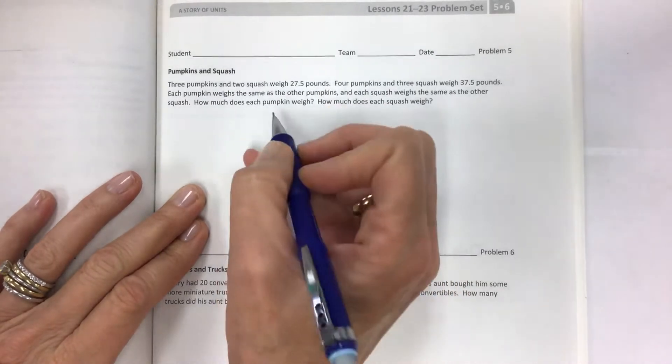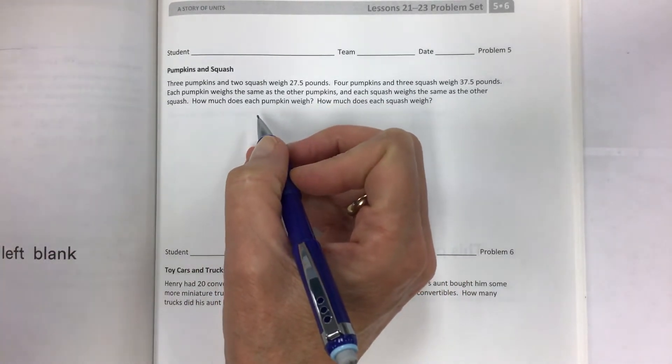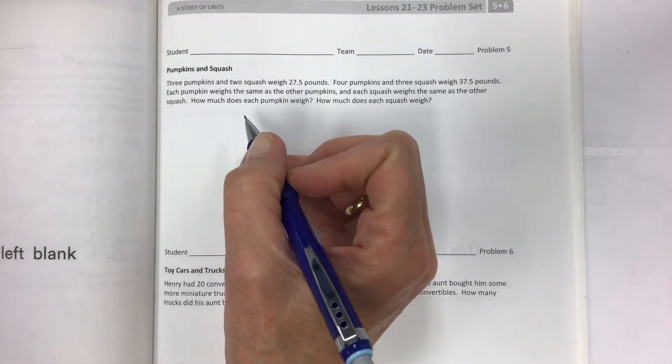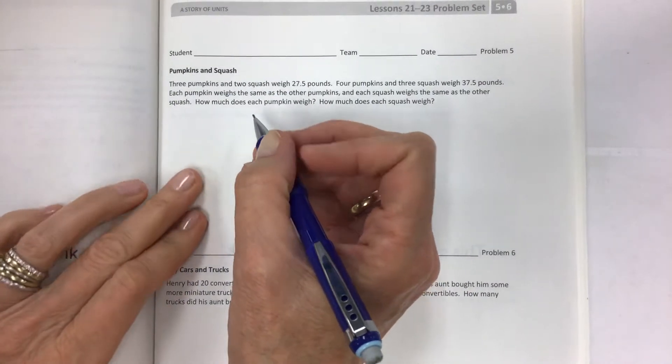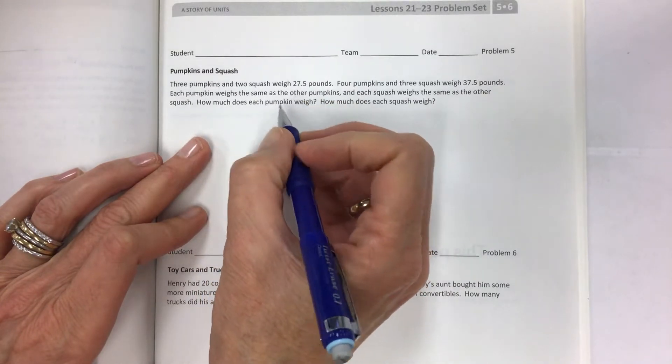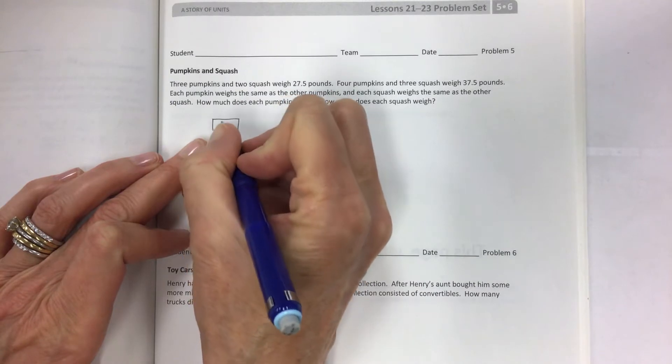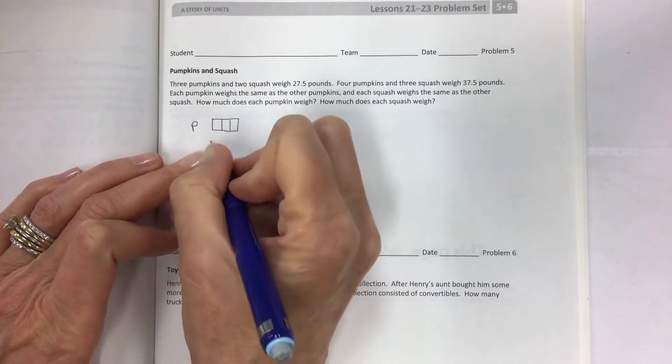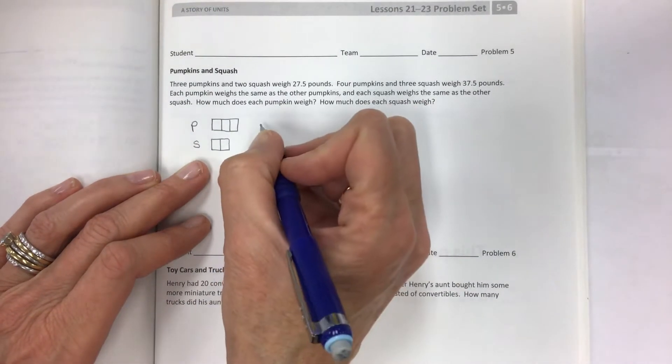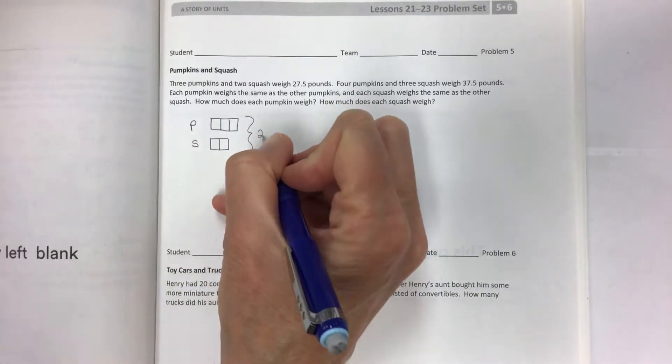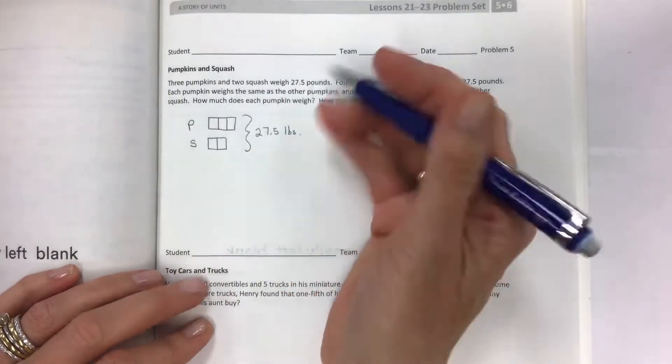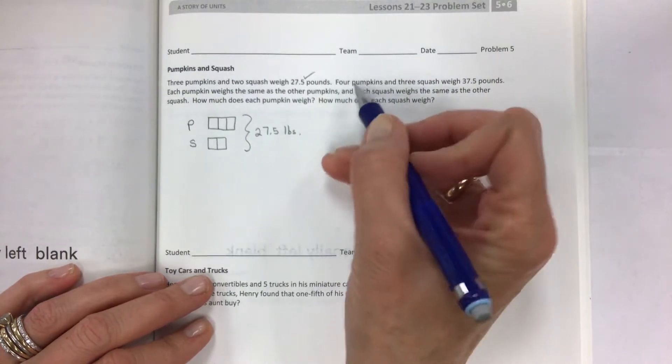When I was younger I could never have solved this. I'd probably just cry and walk away. But we are not young me, and you are going to learn this because you can. We're going to use tape diagrams and I'm going to show you how to do it and make it easier. Let's make a picture of what these three pumpkins and two squash would look like at 27.5 pounds. They're going to look like this: three pumpkins and two squash.